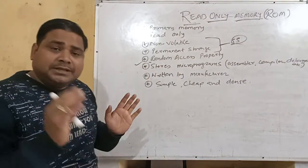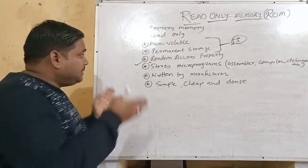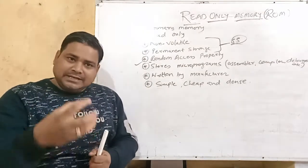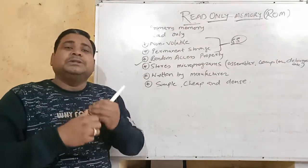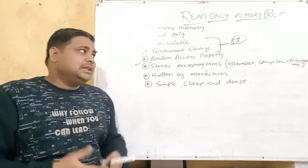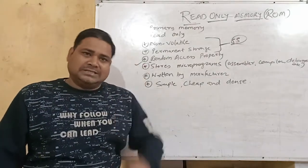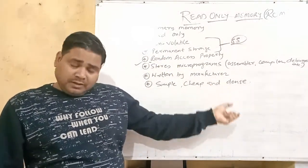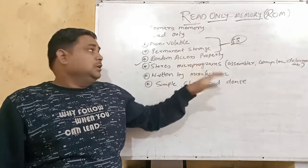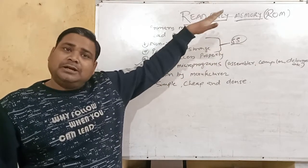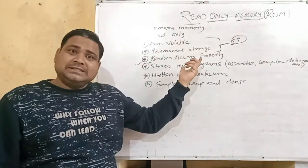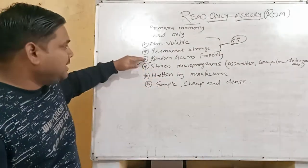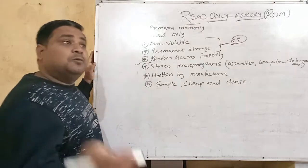Another point is the random access property. This is very important. RAM also says Random Access Memory, which has random access property. But what is random access? It is an accessing method — how to retrieve data from storage. The name 'Random Access Memory' does not exclusively mean random access property; it refers to the accessing method.